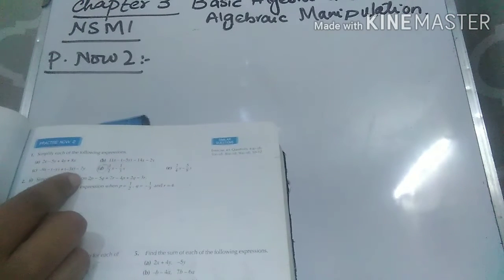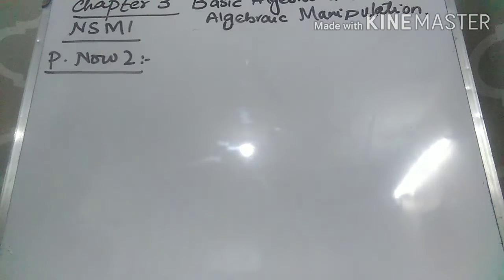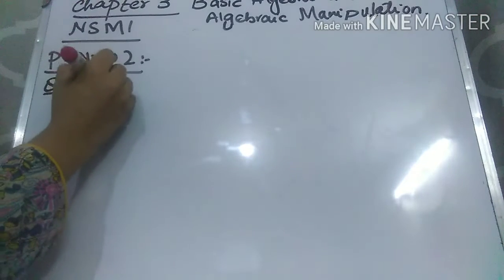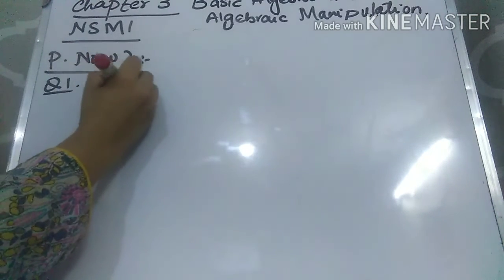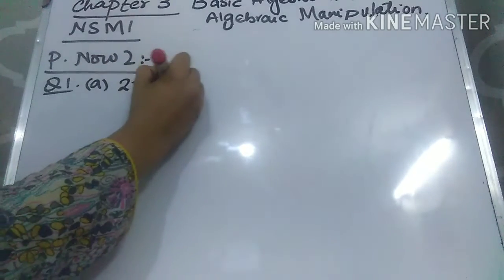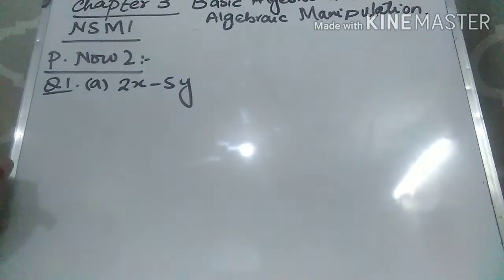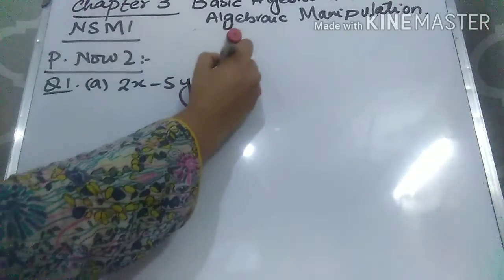Five expressions are given in which you have to simplify them. The second question is simplify the expression again, and part two is find the value of the expression when P is equal to 1/2, Q is equal to minus 1/3, and R is equal to 4. Part A of question number 1 of Practice Now is: 2x minus 5y plus 4y plus 8x.